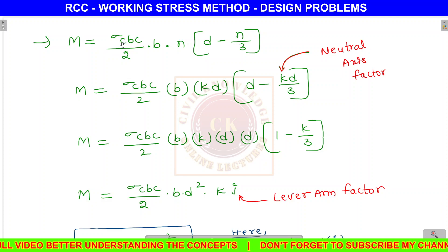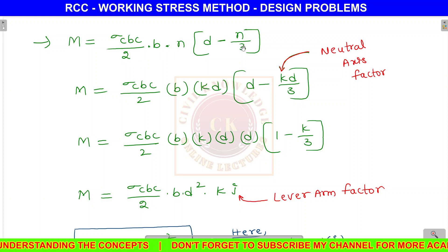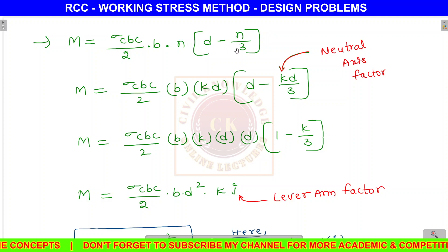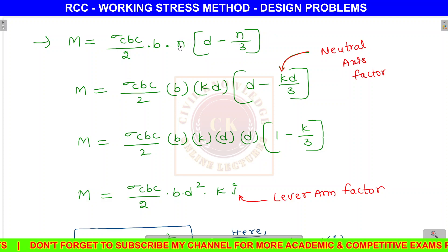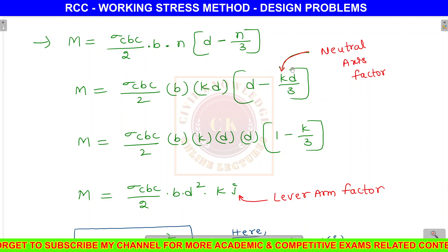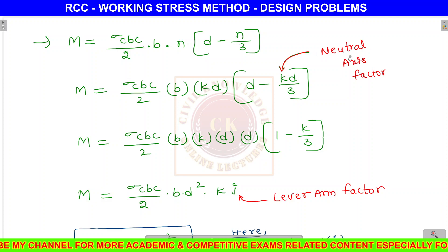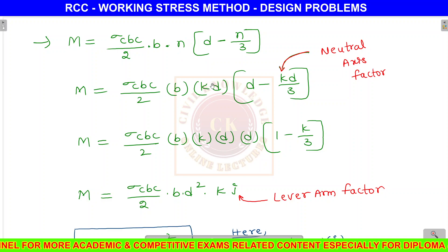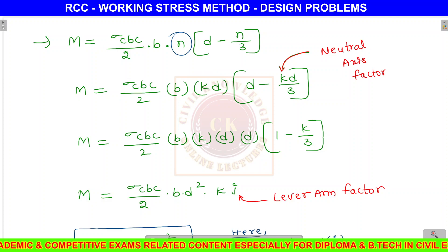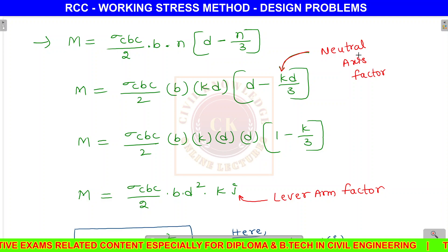The moment of resistance formula with respect to concrete is: sigma CBC by 2 into b into n into (d minus n by 3). The depth of neutral axis formula is n equals k into d, where k is the neutral axis factor.